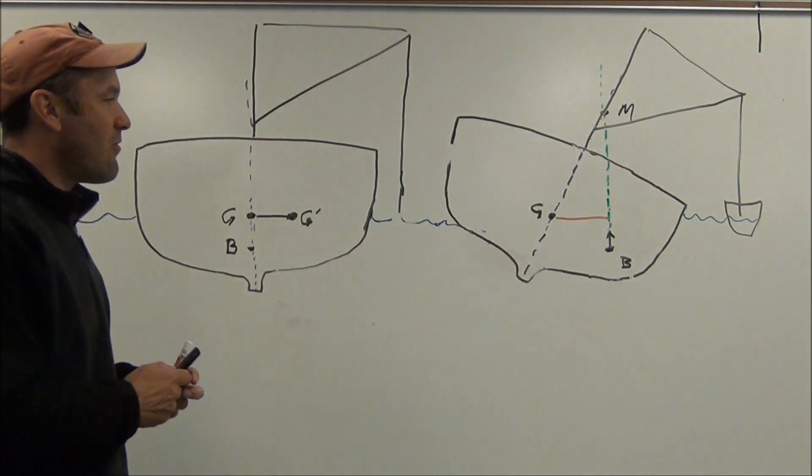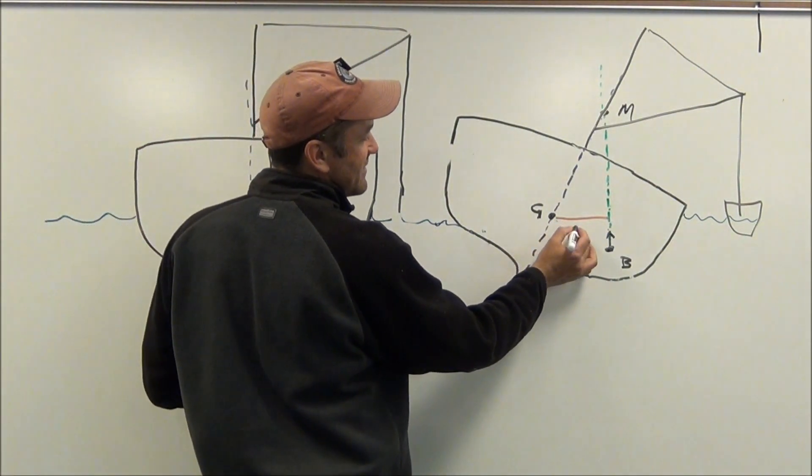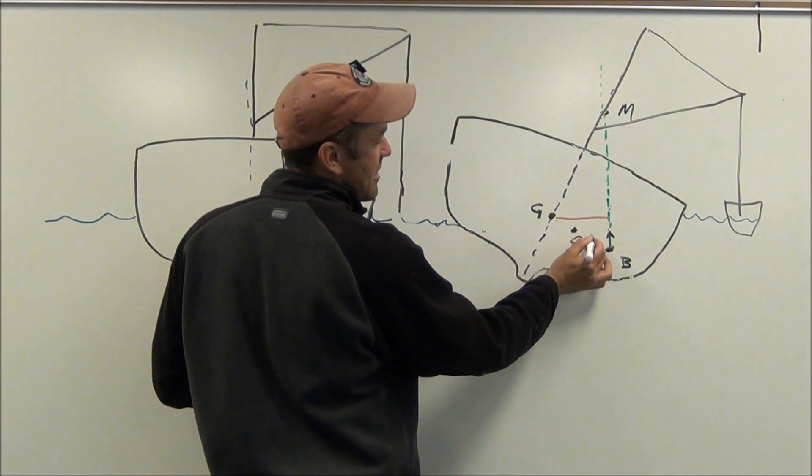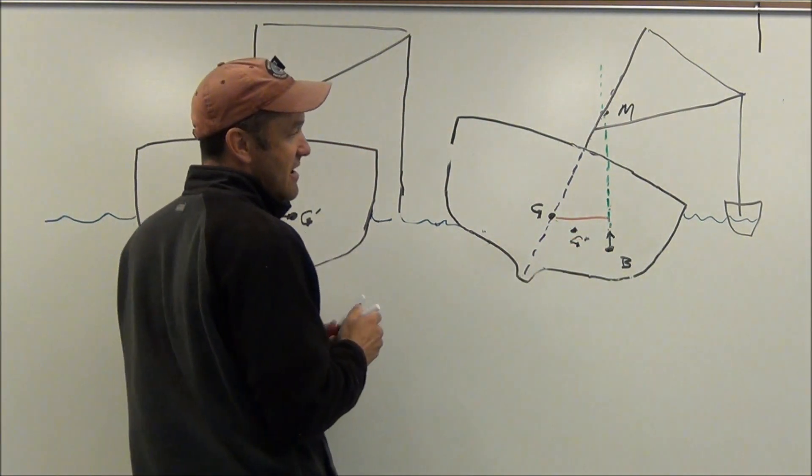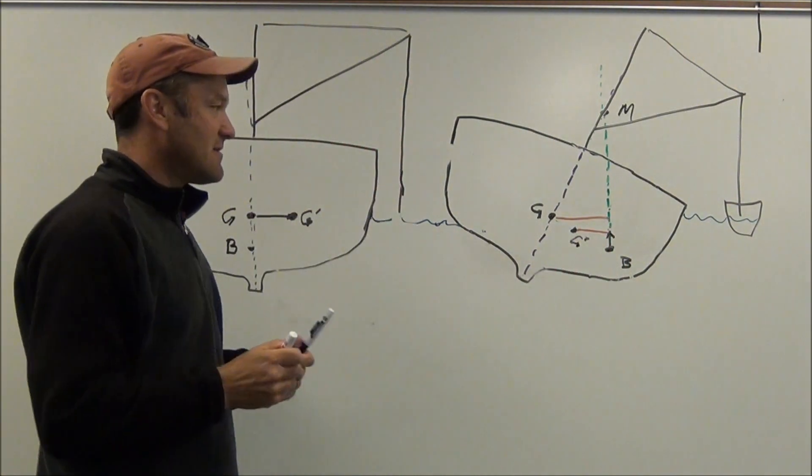If we shift that center of gravity over horizontally, what we've basically done is we've shifted our center of gravity over to here. And then what that has done in turn is shorten that righting arm.